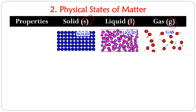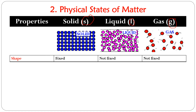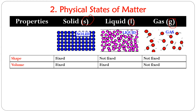Looking at the properties of the three states of matter: solids have a fixed shape, while liquids do not — a liquid takes the shape of whatever container it is poured into. Gases also have no fixed shape. Regarding volume, solids have a fixed volume, and liquids also have a fixed, measurable volume. Gases, however, do not have a fixed volume — their volume cannot be measured in the same way.